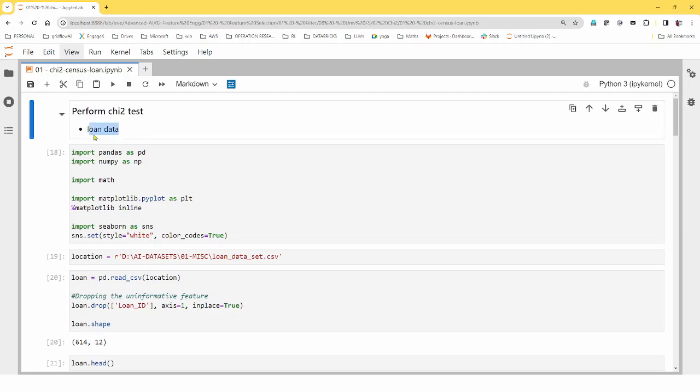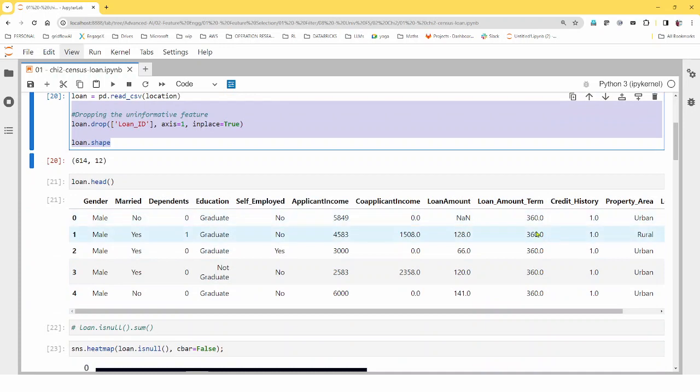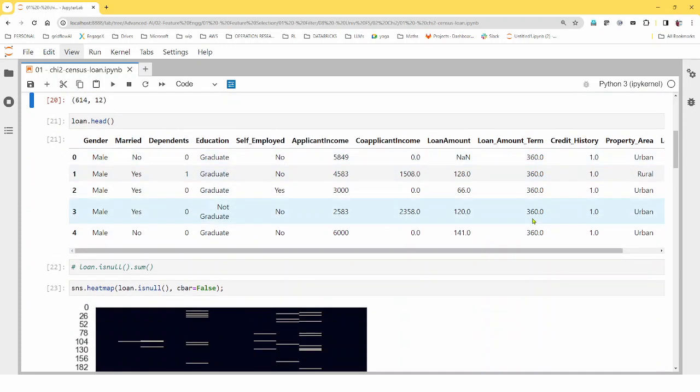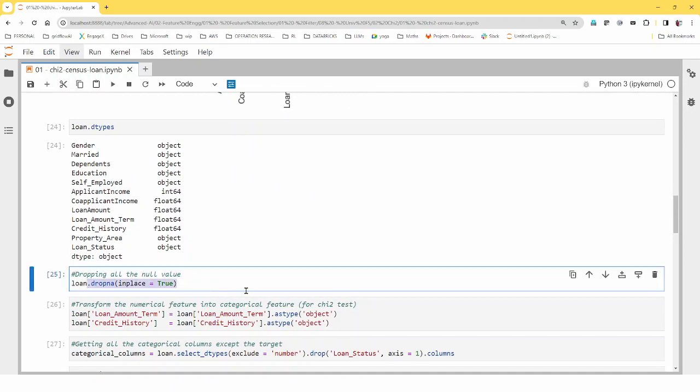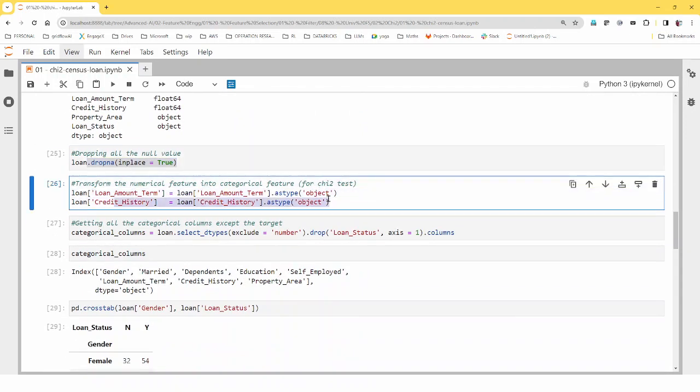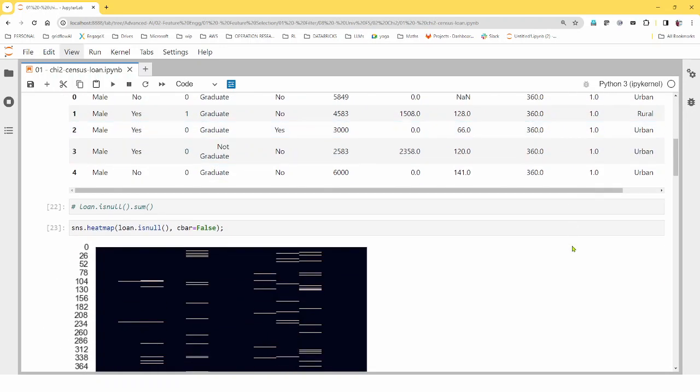To demo the chi-square test, I'm using a data called loan data, and this is the same dataset that we used in ANOVA as well. So load the data here, and this is in my local directory. I'll be also providing the link to this dataset in the description below. Read the data, and most of this data would be categorical. There are some numerical data which we can remove it.